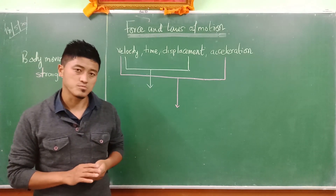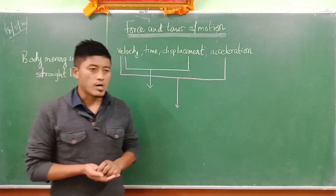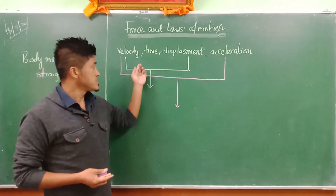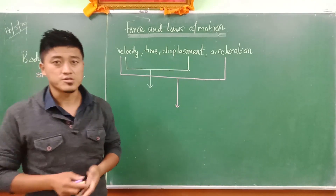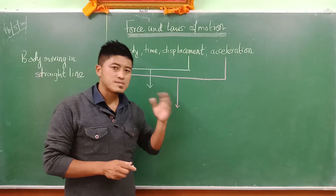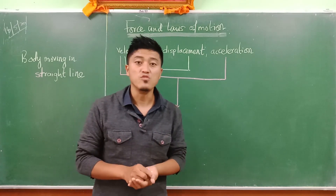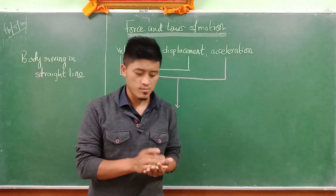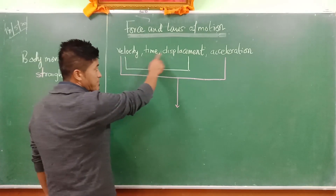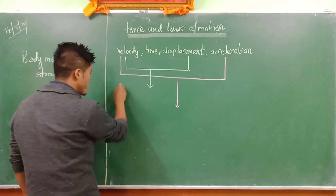In the Motion chapter we talked about velocity, time, displacement, and acceleration. On the basis of that we classified motion into two types: uniform motion and non-uniform motion. Whenever there is involvement of velocity, time, and distance without acceleration, we call this uniform motion.